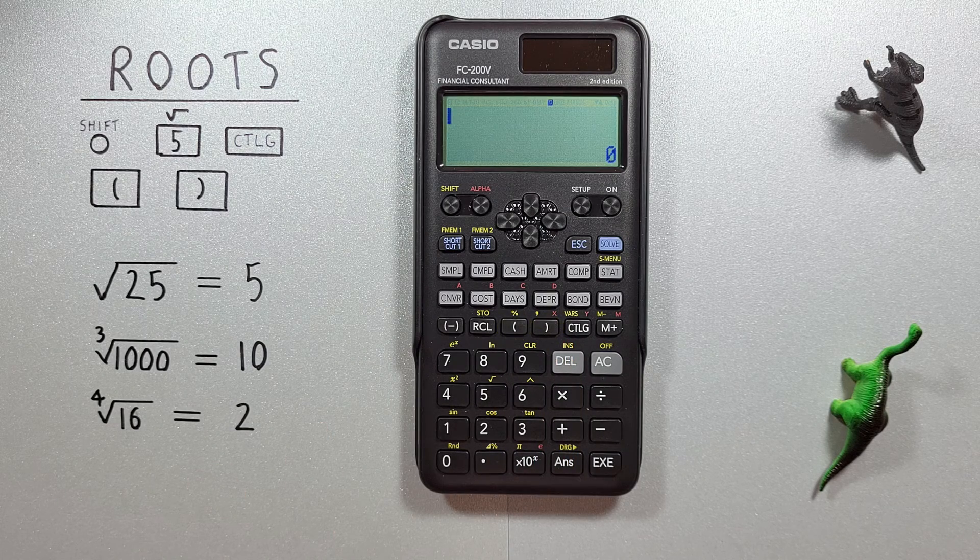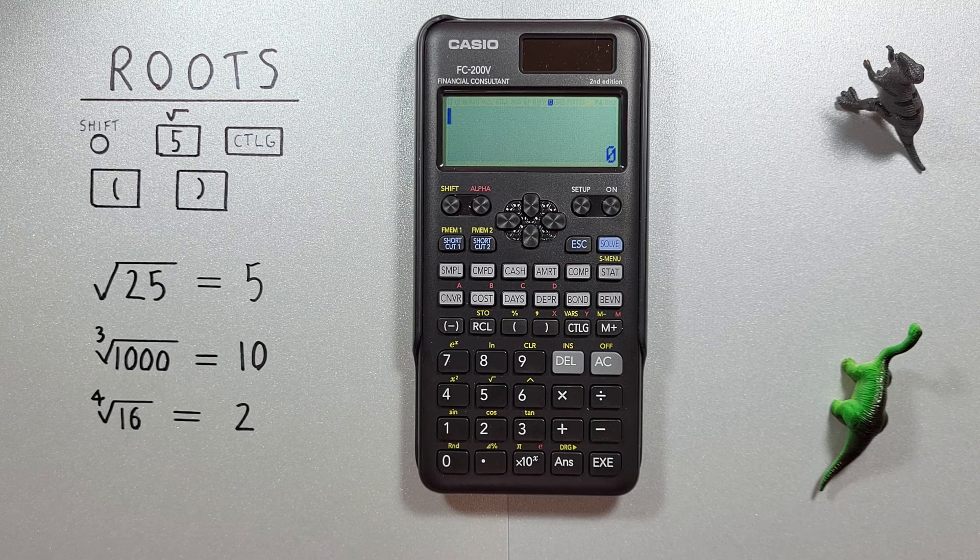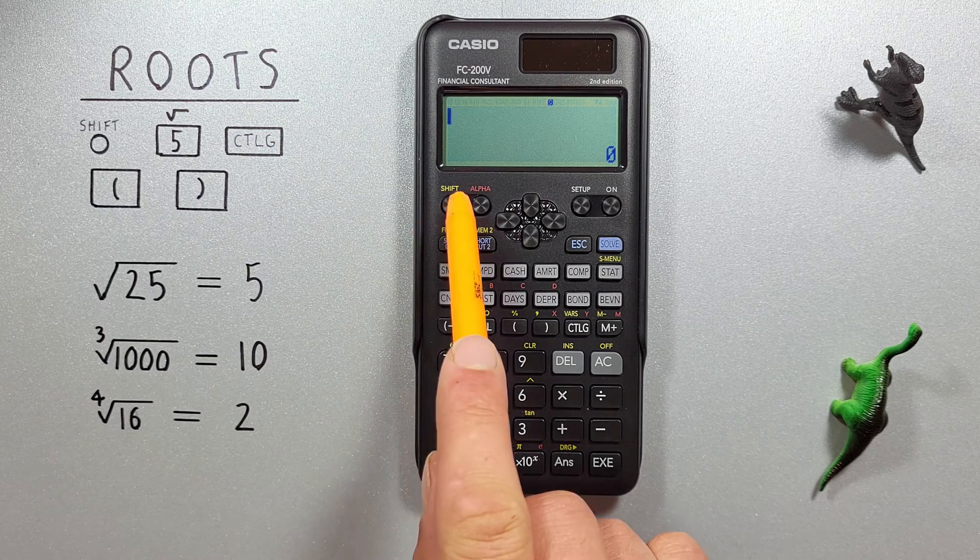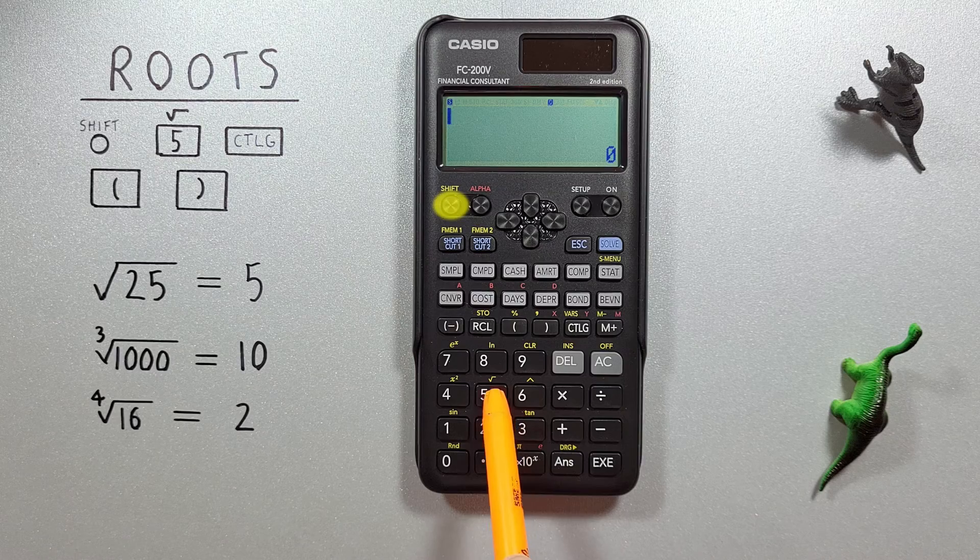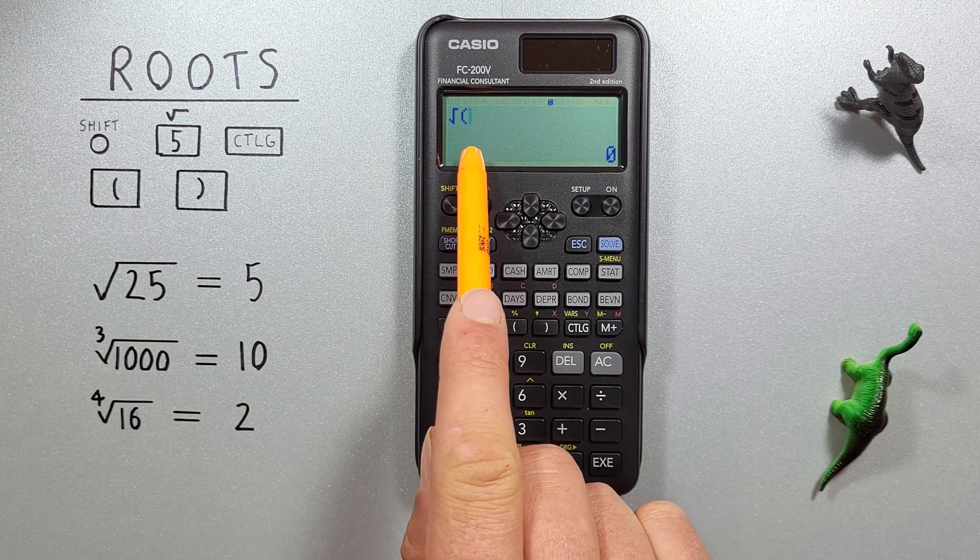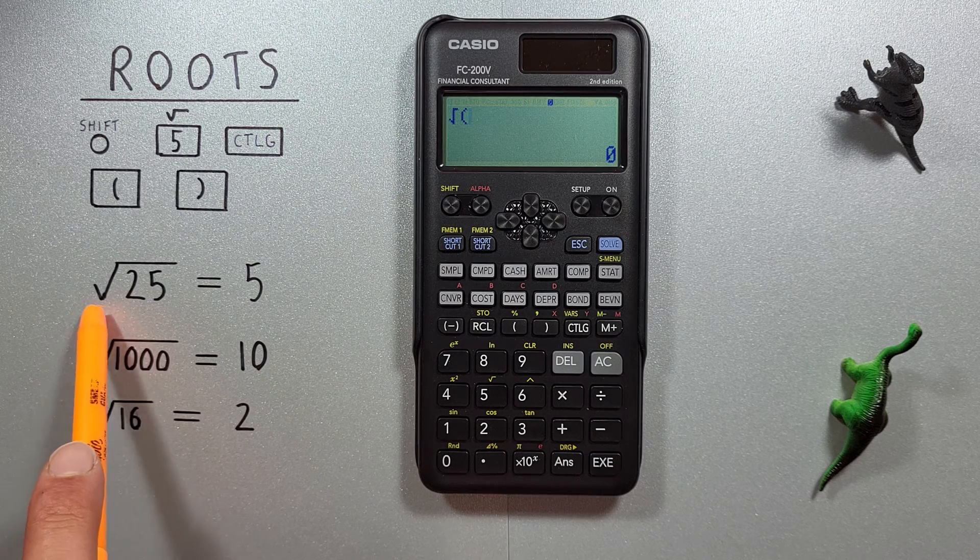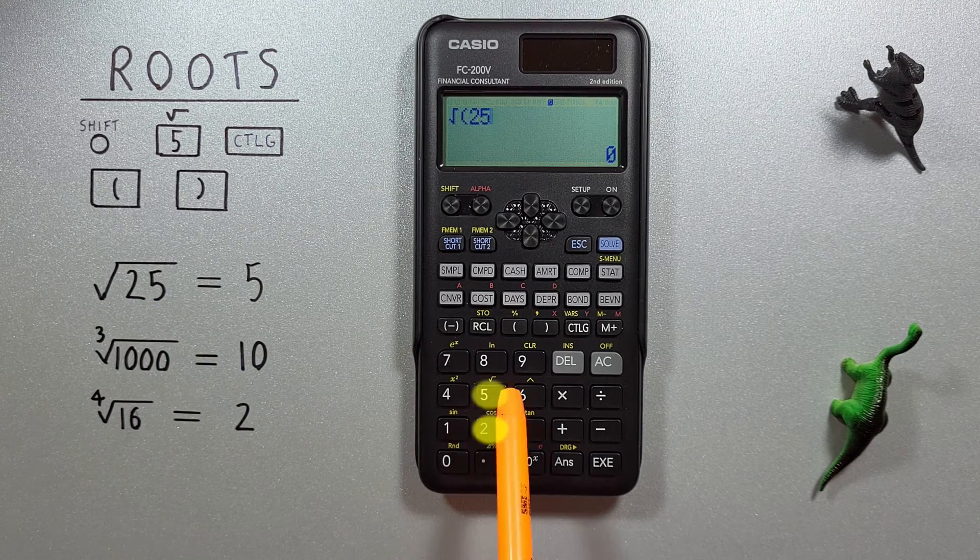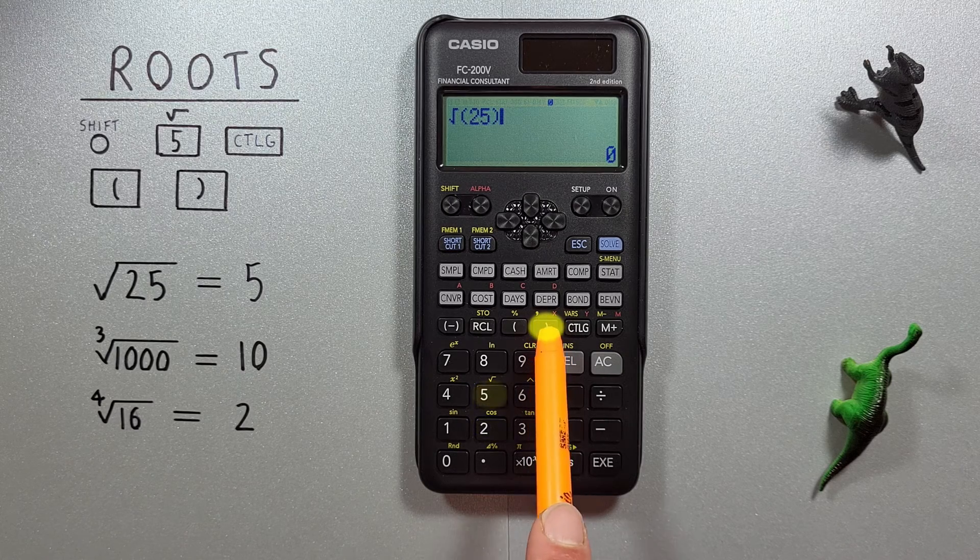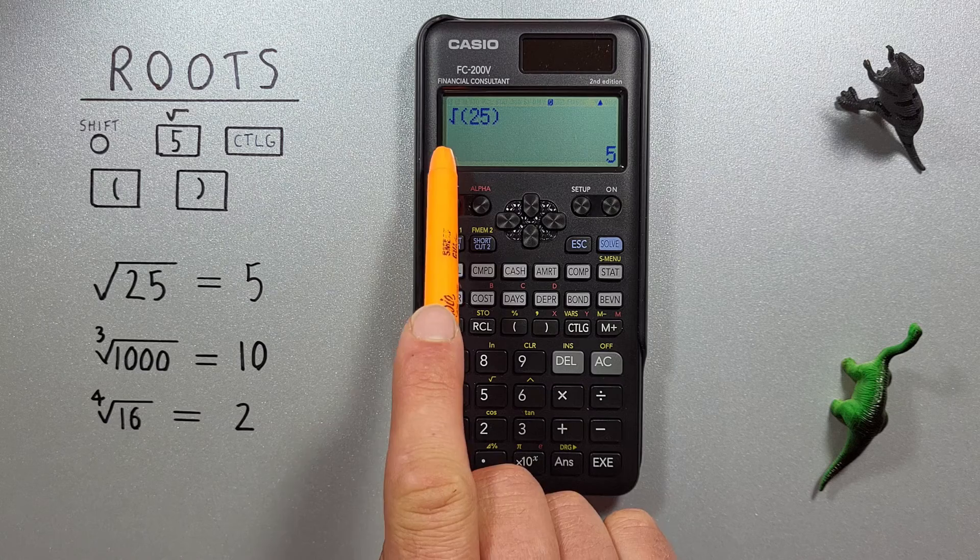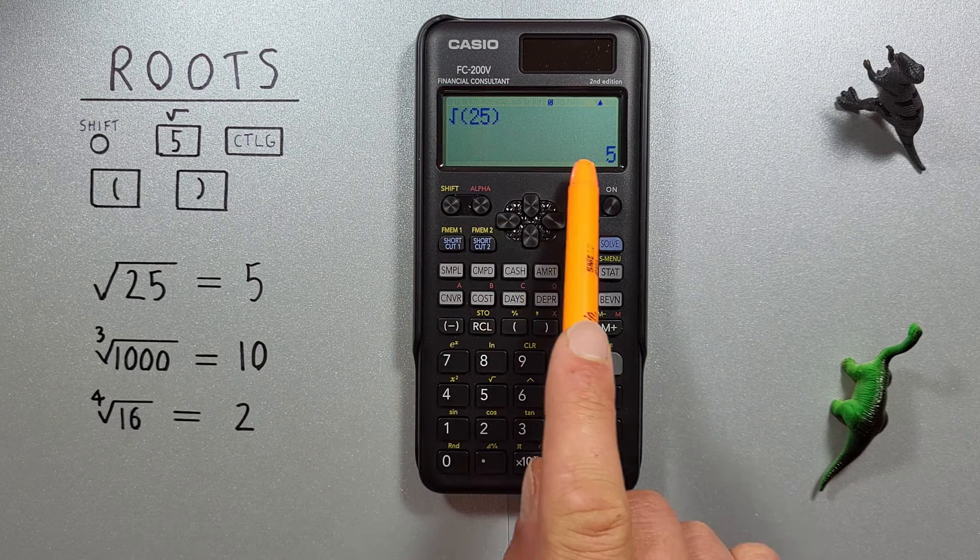If we just want to square root a number on this calculator, we have two options. If we want to use the keypad, we press shift and then 5 to see the square root symbol on our screen there. And then let's say we want to square root 25, we would enter the 25, close our brackets, and hit exe. And we see we get the result of square root of 25 is equal to 5.